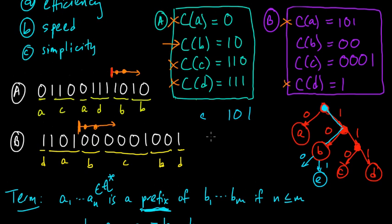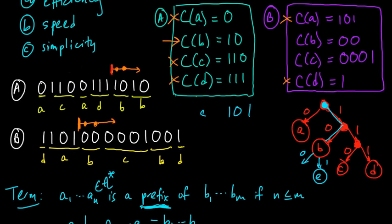Okay, so we defined prefix, we thought about the tree representation, and this is an important way to think about them later on when we talk about the Kraft Macmillan inequality. Thinking about these codes in terms of their trees is a very nice way to think about them.